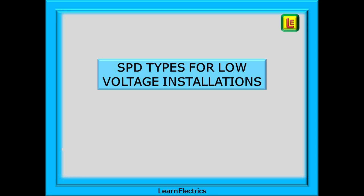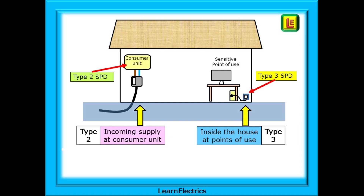It sounds simple — and it is simple. We can now look at SPD types for low voltage installations. For a 230 volt domestic property, the two types we are most often interested in are Type 2 and Type 3 SPDs. A Type 2 SPD is installed at the origin of the installation — the consumer unit — and one device will protect the whole installation. A Type 3 SPD is designed for protection of specific devices and is installed close to the point of use, such as an SPD-protected socket or extension lead. A Type 3 can be used in addition to a Type 2. There is also a Type 1 SPD for locations prone to lightning strikes, but that is not covered in this video.